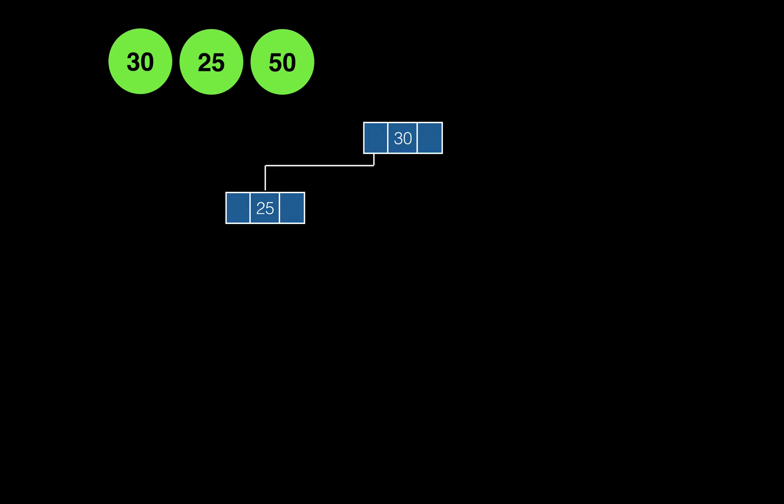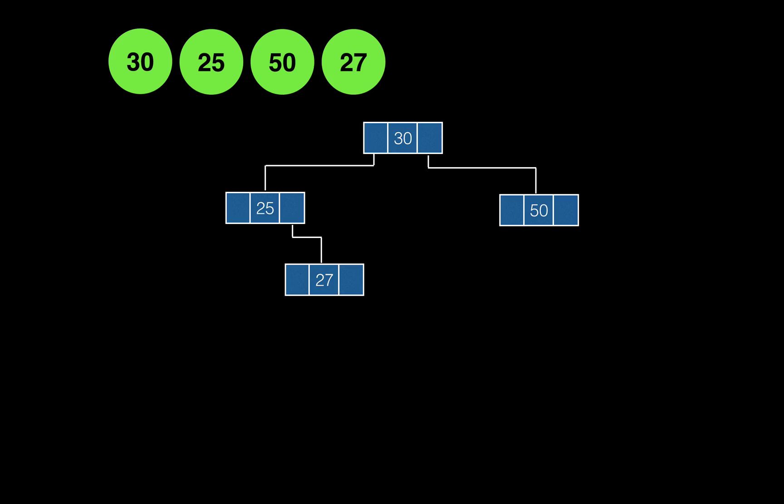We have 50 — 50 is greater than 30, so it should be to the right of 30. Next, 27 is less than 30 so it should be part of the left subtree. Since we have 25, we check 27 against 25. 27 is greater than 25, so it should be to the right of 25. Then 40 is greater than 30 and less than 50, so it should be to the left of 50.